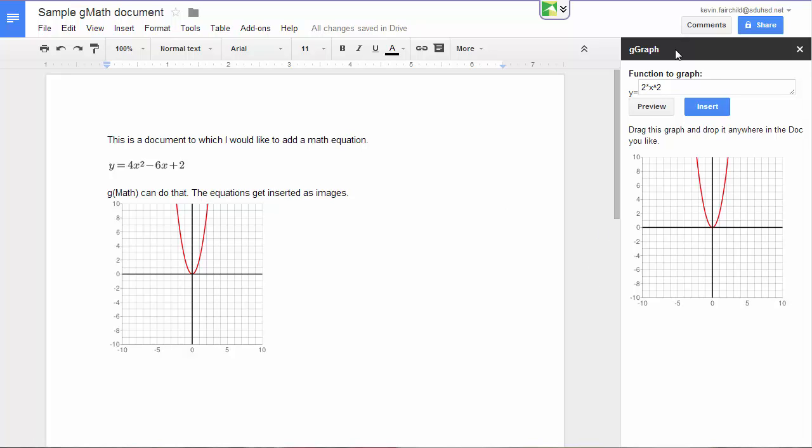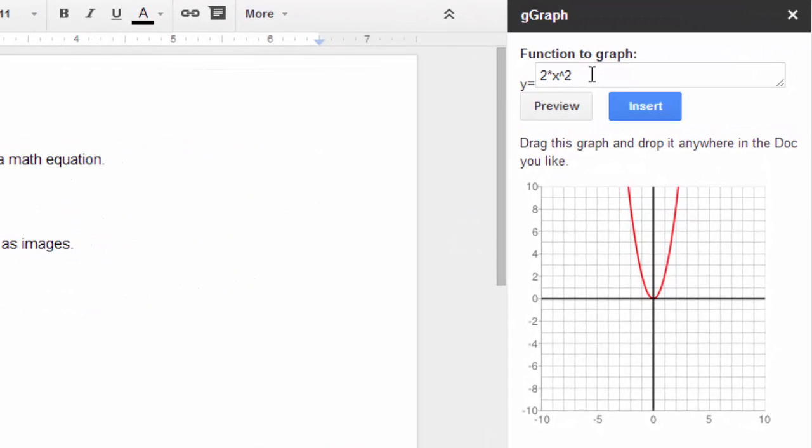I can also change the function. I don't want it to be 2x squared anymore. Now I want to give it a different function. I'm going to make it 2x cubed plus 4 and preview that. It gives me the new graph.